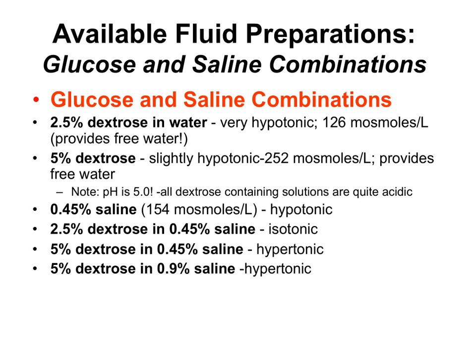Then we have combinations of glucose and saline. You're going to see 2.5% dextrose in water, and just dextrose itself. Dextrose has no salt — it's slightly hypotonic. But when metabolized and taken up into the cells, it basically delivers what's called free water to the extracellular fluid. You have to consider that its pH is low, so all dextrose-containing solutions are prepared in an acidic formulation. Half-strength saline is hypotonic because it's half of 0.9% saline. 2.5% dextrose and 0.45% saline is considered to be isotonic, but when the dextrose is metabolized it becomes hypotonic, so you have to consider the eventual fate of the dextrose.